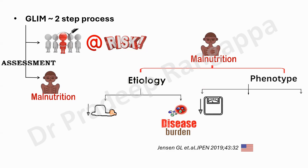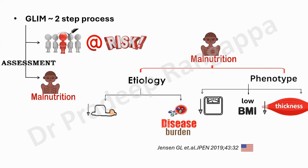In the phenotypic criteria, they assess whether there is weight loss — an objective assessment of weight loss — and whether there is a low BMI. The third aspect, which other tools may not have encompassed, is muscle wasting: whether there is sarcopenia or ongoing muscle loss. So GLIM components require either one etiological criterion and one phenotypic criterion to diagnose malnutrition — either reduced intake or underlying disease, plus weight loss, low BMI, or sarcopenia.